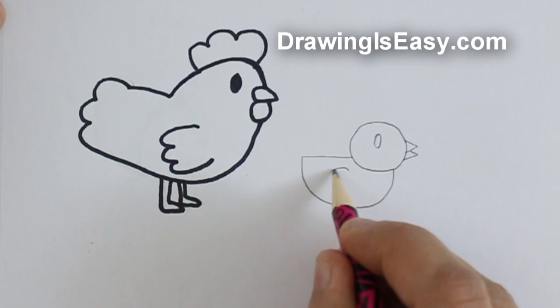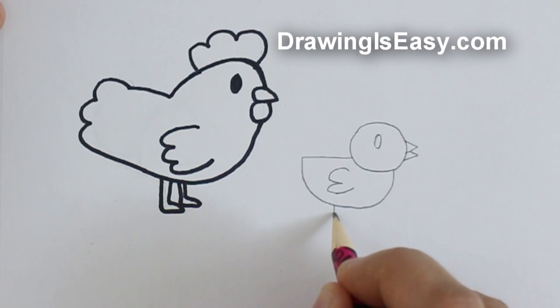To make the wing, we're going to make the letter E, and to make the feet, we're going to be making the letter P again.